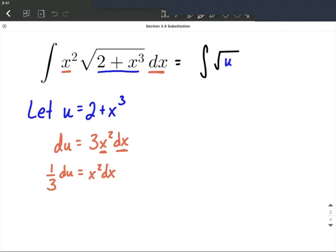And then everything else got replaced with the x squared and the dx is going to get replaced with one-third. Because it's a constant, I typically put that out in front, and then we'll put a du at the end. So hopefully you can see where we filled in with what's in red at the bottom.